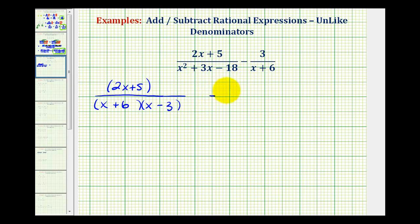And then we have minus 3 all over a factor of x plus 6. Now in order to find the common denominator, we just need to make sure that the denominators contain the same factors. We'll notice how this denominator here contains a factor of x minus 3 and this denominator doesn't, so if we're going to have like denominators, this denominator needs a factor of x minus 3.